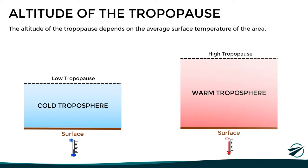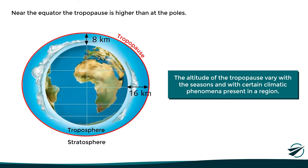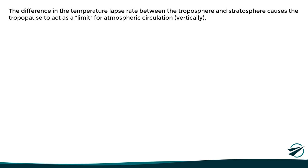With this in mind, it is logical to think that near the equator, where the surface temperature is high, we will have a much higher tropopause than at the poles, where the surface temperature is much lower. Although in general terms this is true, the altitude of the tropopause also depends on the seasons and certain climatic phenomena present in a region, especially in mid-latitudes.